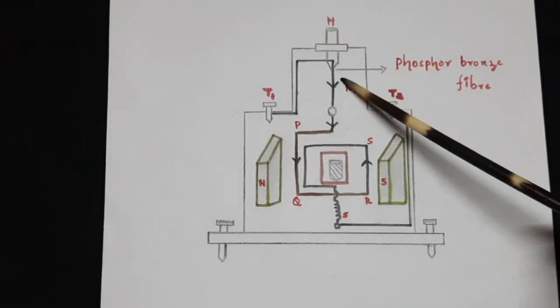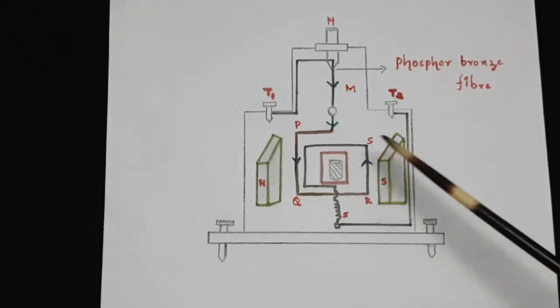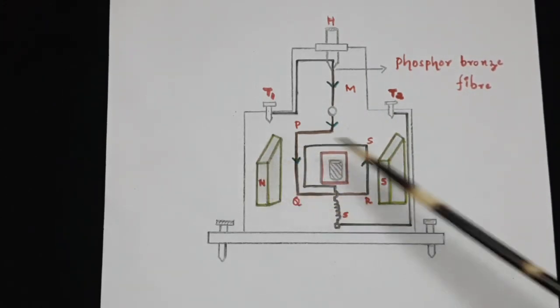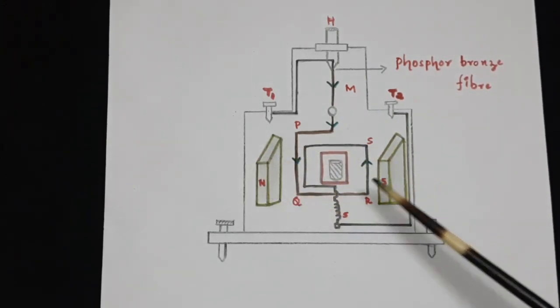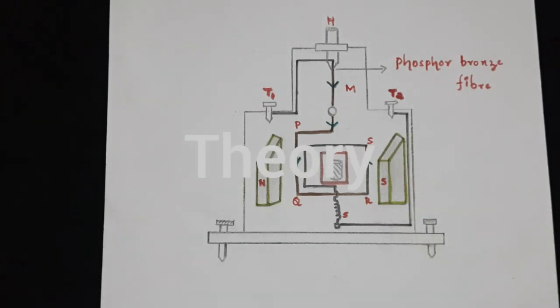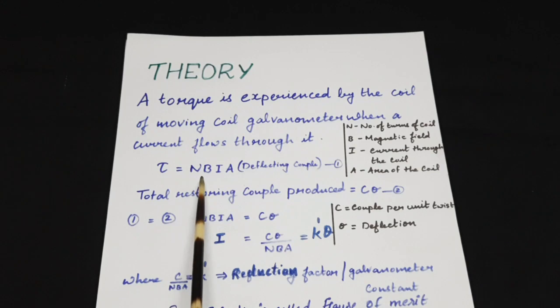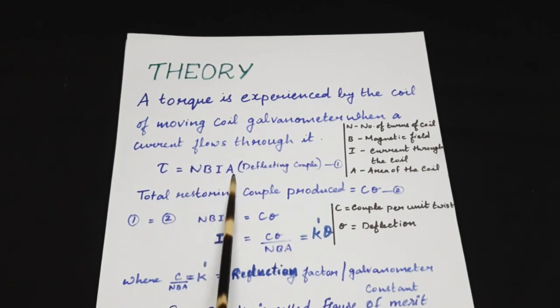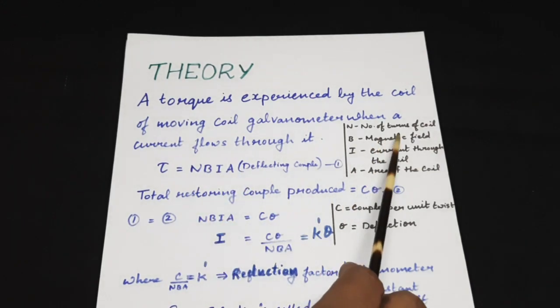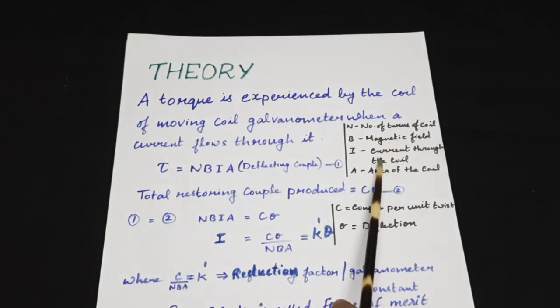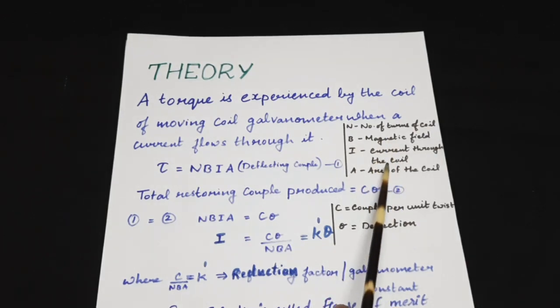When a current flows through this coil placed in between two pole pieces of a magnet, it experiences a torque. The deflecting torque experienced by the current carrying coil tau will be equal to NBIA, where N is the number of turns of the coil, B the magnetic field, I the current through the coil, and A the area of the coil.